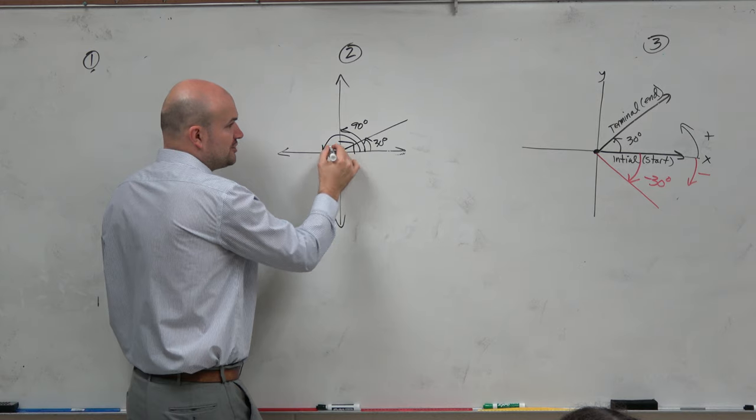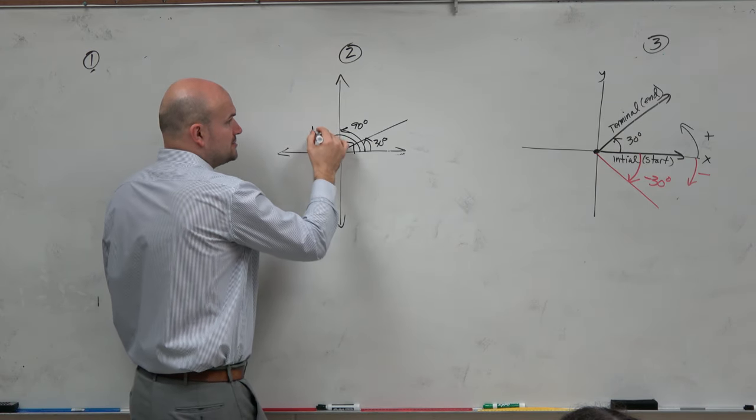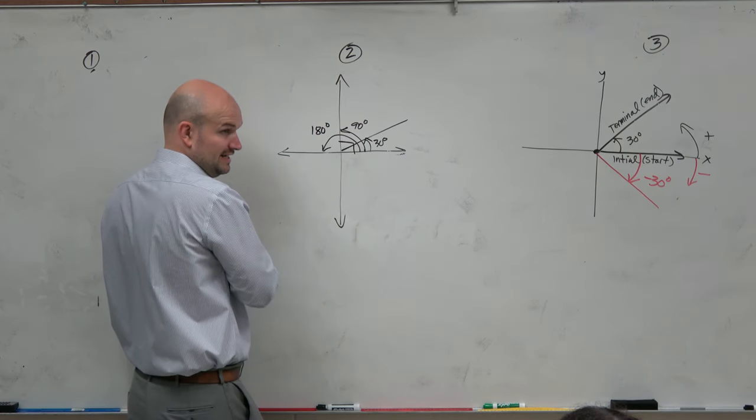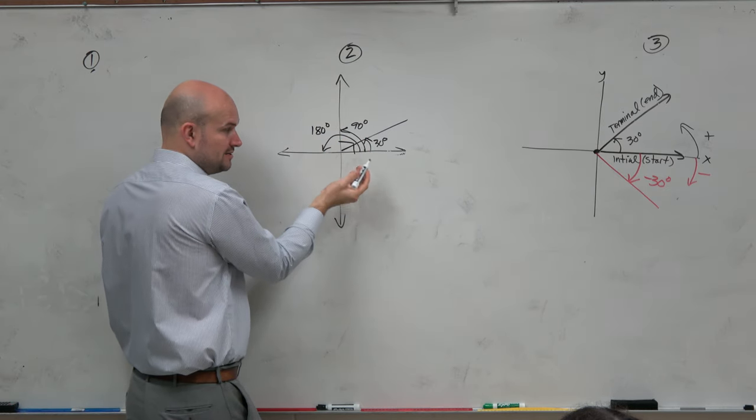From here to here is what we call the straight angle. It makes a line, which we represented as 180 degrees, which is basically 90 plus 90. It's two right angles.